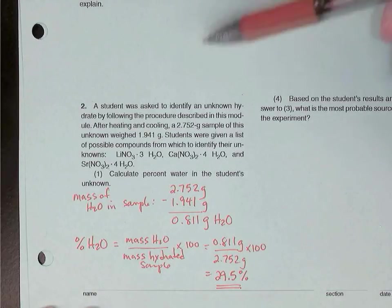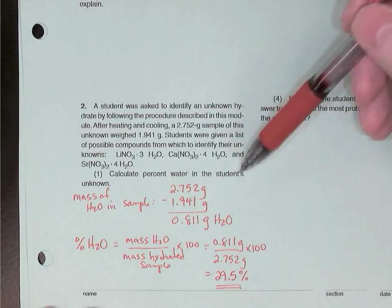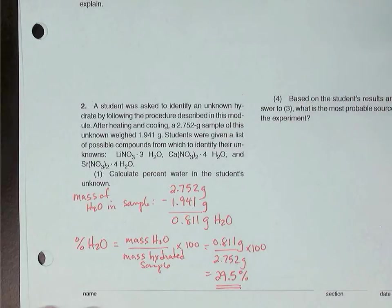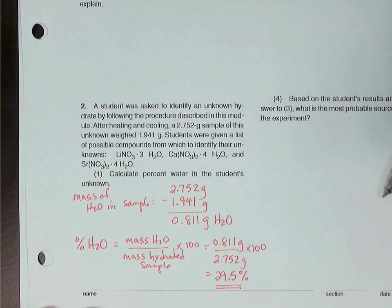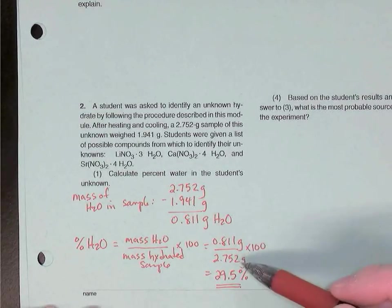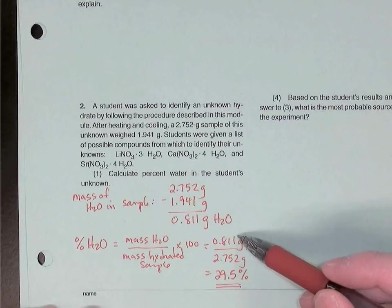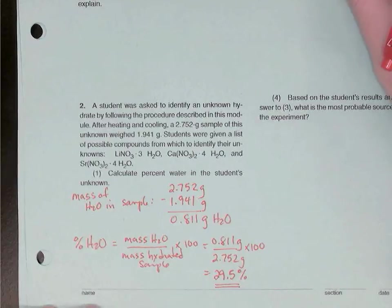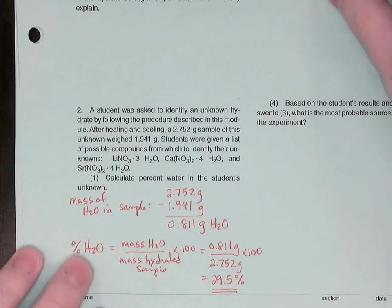To find the percentage of water in the hydrate, we take the mass of water that was evolved, so 0.811 grams, and we're going to divide that by the mass of the hydrated salt. So in this case, the 2.752 grams, and then times by 100. When dividing numbers with significant digits, you round off your answer to the lowest number of significant digits. So three significant digits in the numerator and four in the denominator. I'm keeping three significant digits in my percentage. So this sample had 29.5% water.